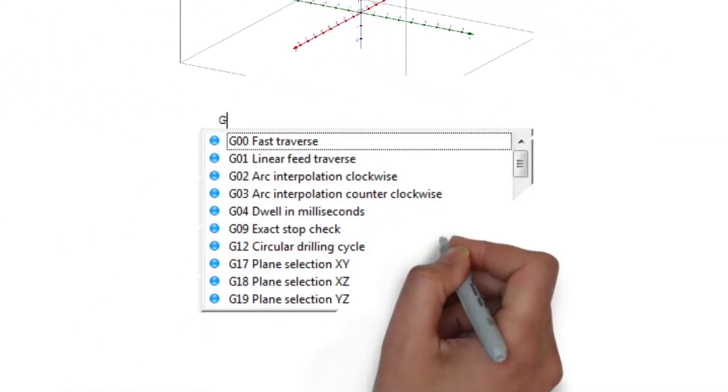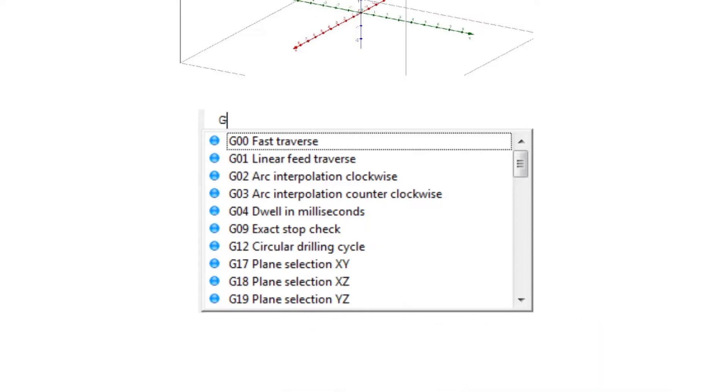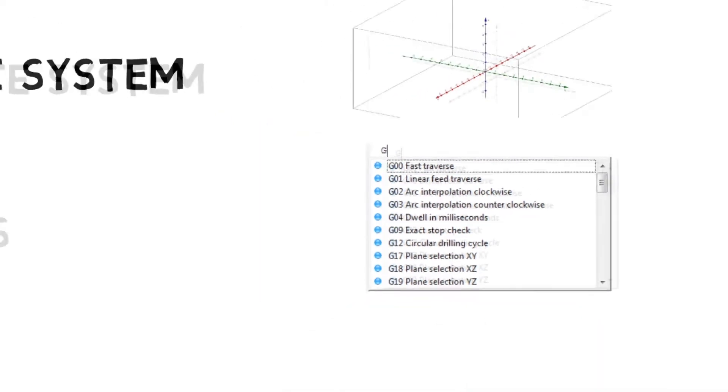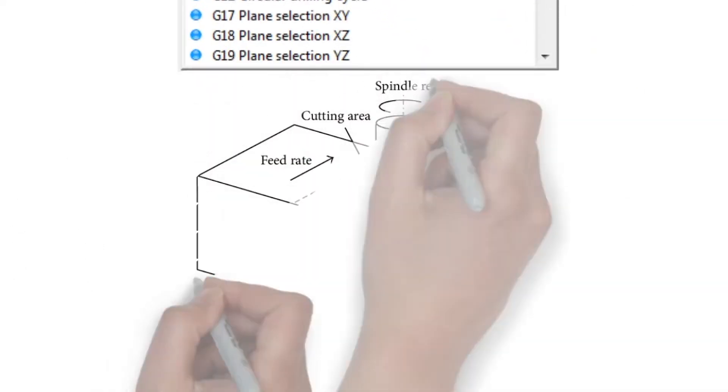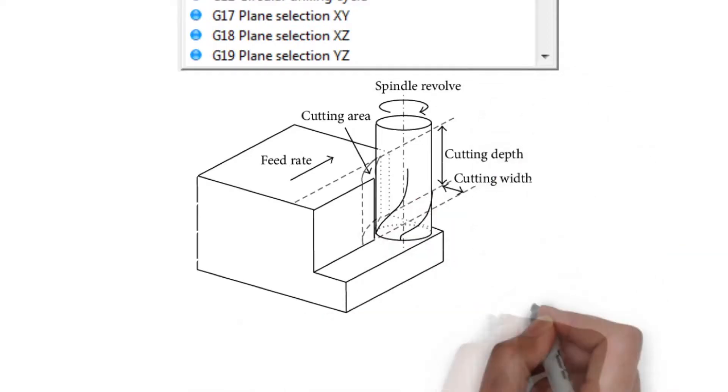Number 2: CNC Codes. CNC Codes includes G and M Codes which is used for various functions. And finally, Number 3 is Cutting Parameters. These are the parameters used for machining which includes spindle speed, feed rate and the tool engagements.